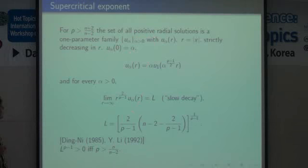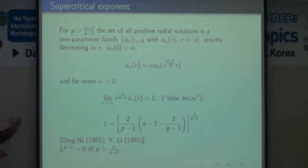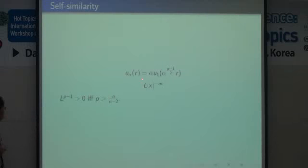In the supercritical case, all radial solutions behave like this one. Of course, the symmetry of positive solutions is a very interesting question, but it is essentially still open. Some cases have been proved, but not in general. This self-similar singular solution is invariant under the scaling. I will explain the asymptotic behavior at zero of the singular solution and the asymptotic behavior of entire solutions at infinity.